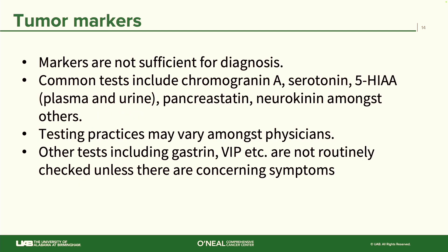In terms of tumor markers, the first thing to say is they are not sufficient for diagnosis alone — these are things we use in clinic to aid in diagnosis. The common tests used are chromogranin A, serotonin, plasma or urine 5-HIAA, pancreatic polypeptide, neurokinin A, and others. This can vary amongst physicians — one physician may order all of these tests, another may use just two. Practices can really vary.